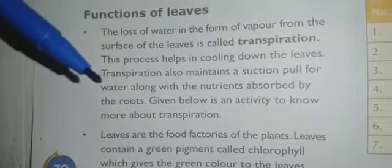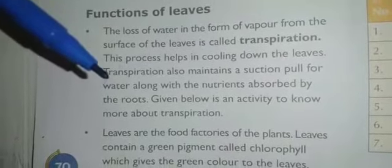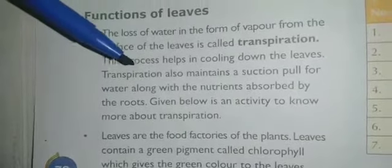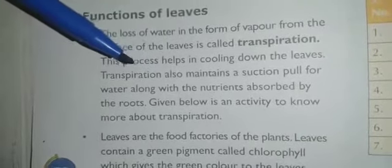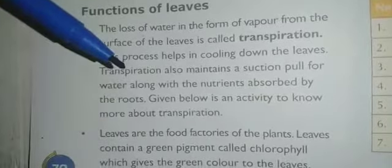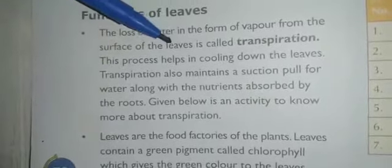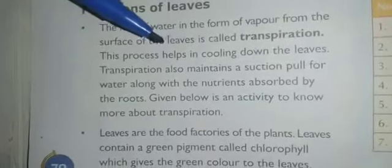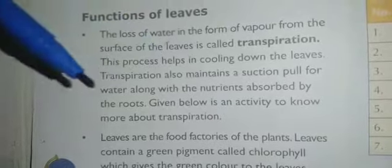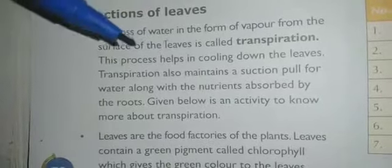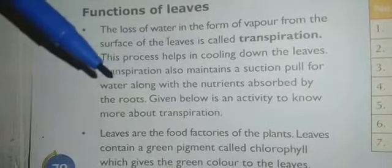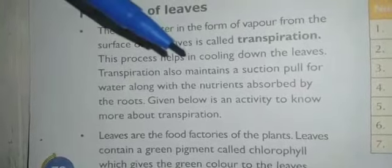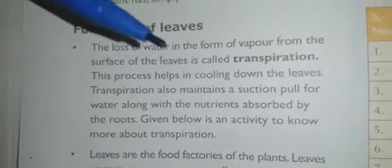Once the water starts evaporating from the leaves, the plant becomes deficient in water and must get water from the roots. When transpiration is happening, the water from the roots will be absorbed through this suction pull.